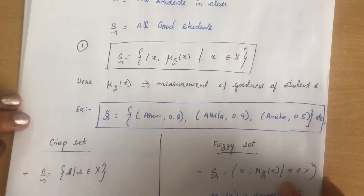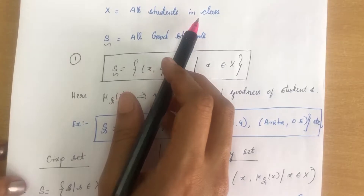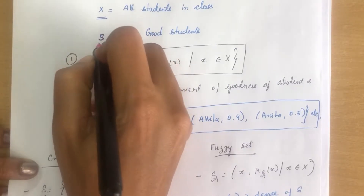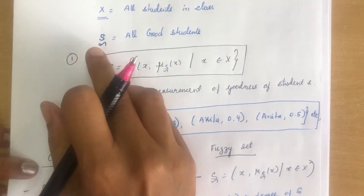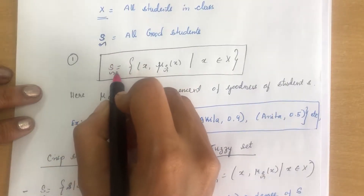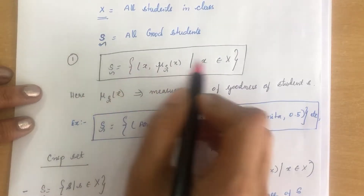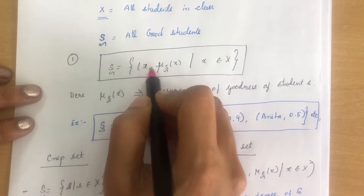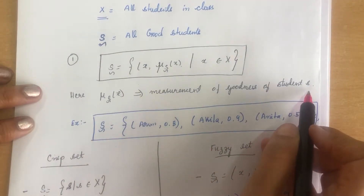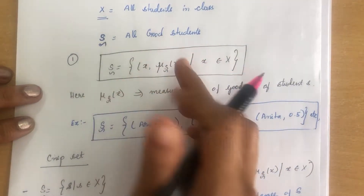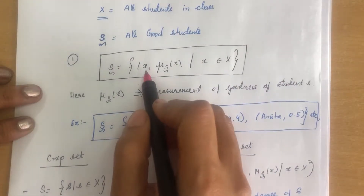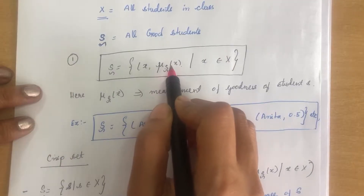A fuzzy set can be represented in two ways. For example, X is the universal set containing all students in a class, and S (with a tilde symbol) is a fuzzy set of all good students. A fuzzy set is represented by a set of ordered pairs: { (x, μ) }, where μ is the membership value representing the degree of goodness of each student.